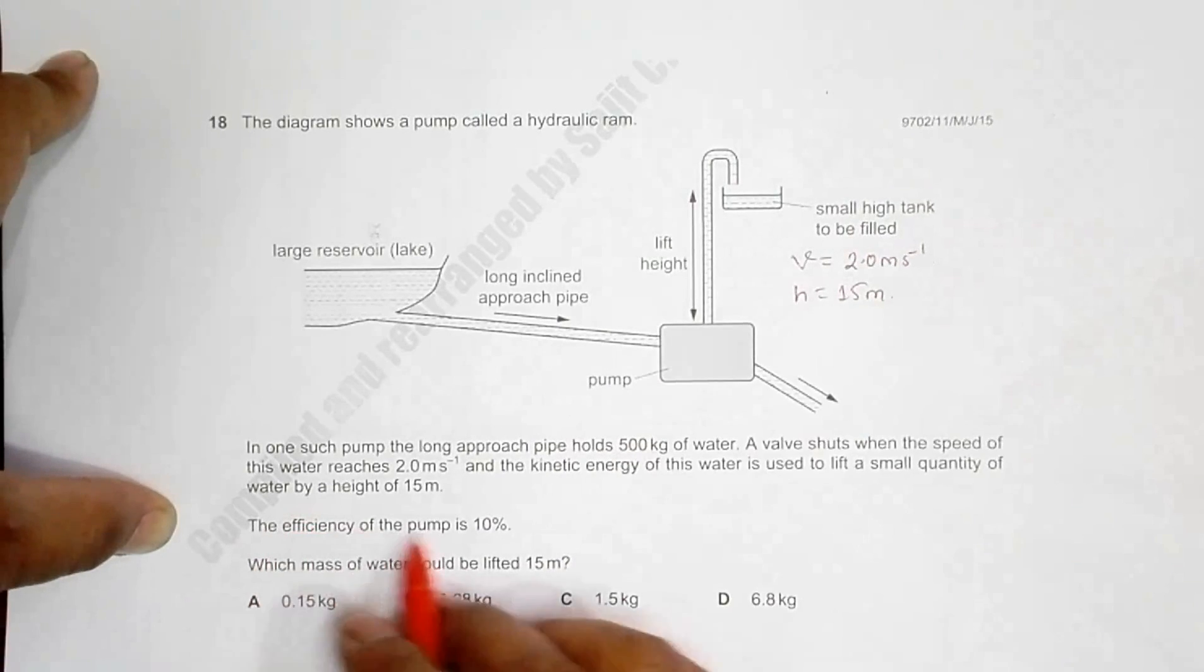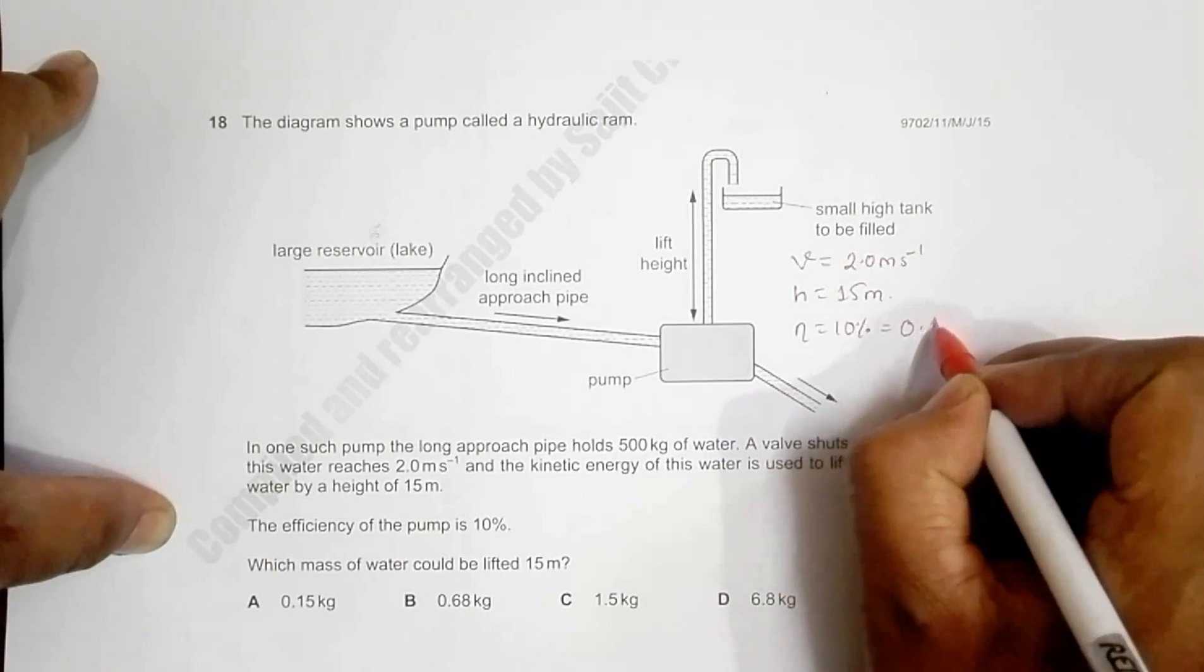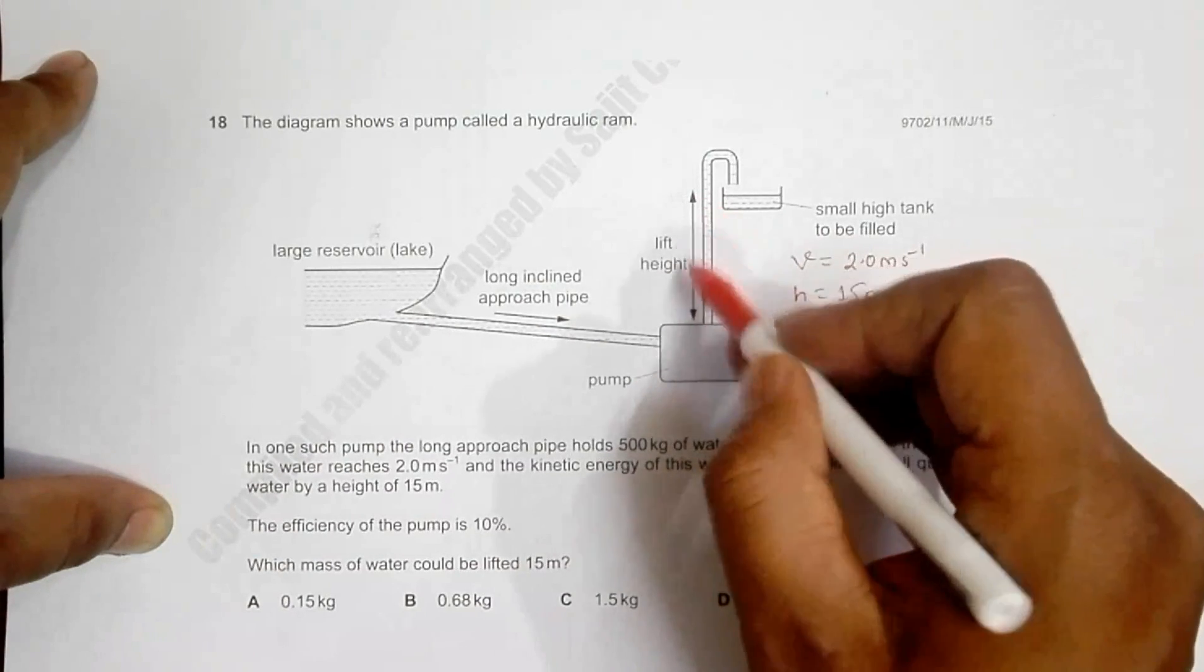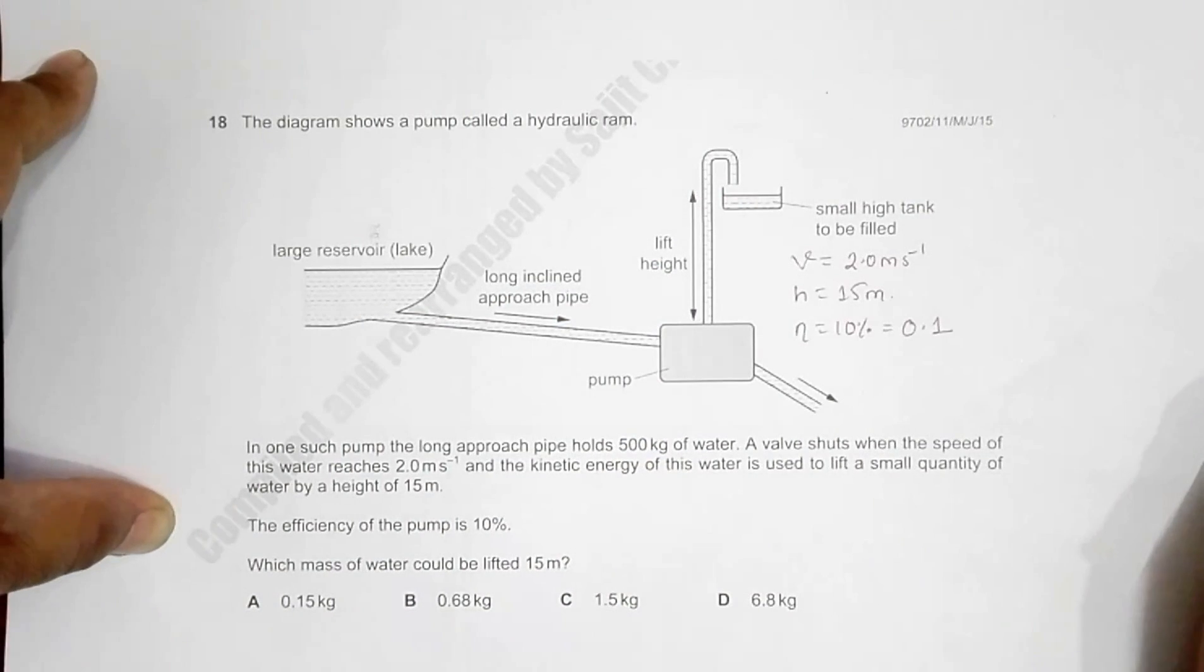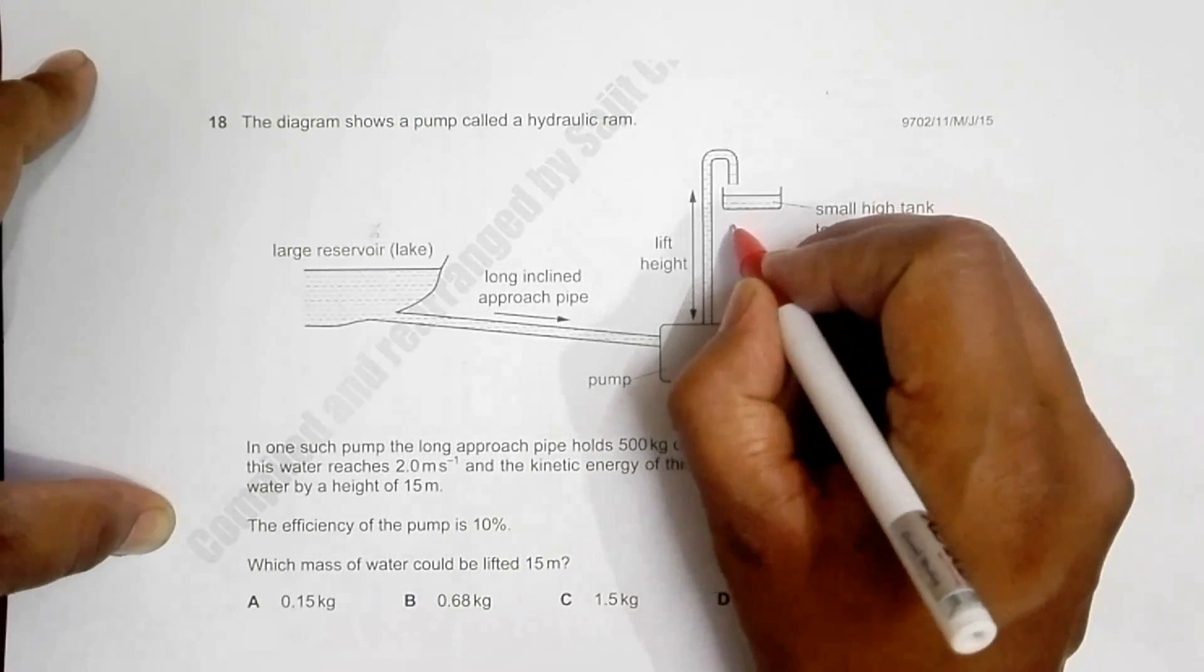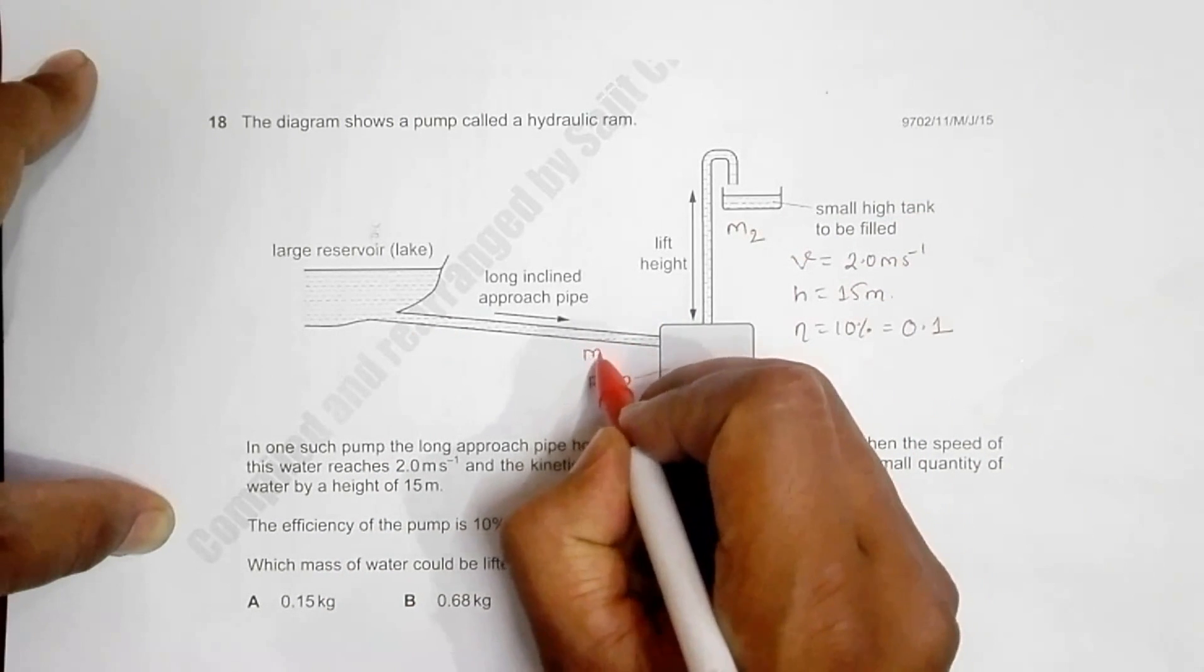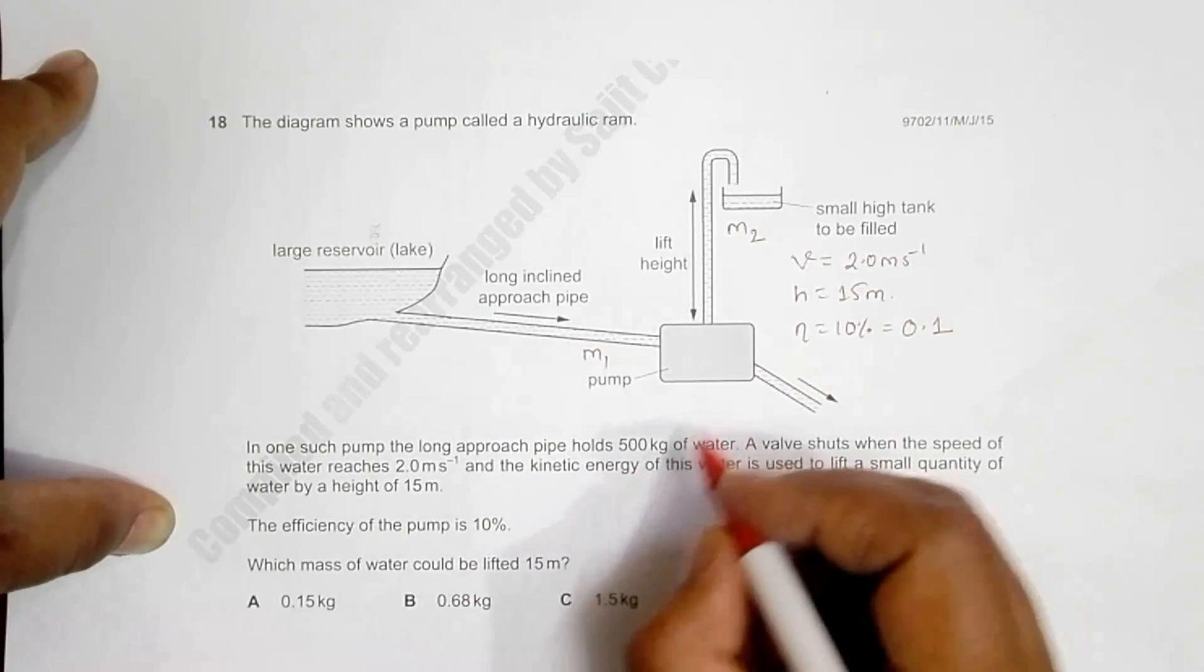The efficiency of the pump, eta, is equal to 10 percent, which is equal to 0.1. And we have to find with this energy what is the amount of water that can be lifted by this 15 meter distance. So let's say the amount of water that can be lifted is m2 and the amount of water entering here is m1.